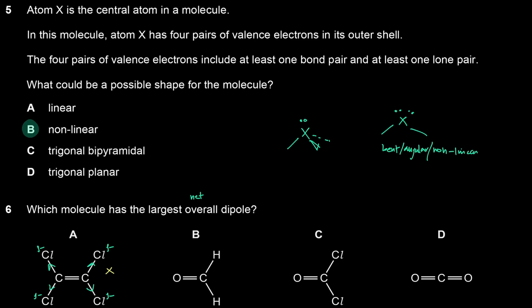Molecule B does have a net dipole towards the oxygen, since oxygen is delta minus and carbon is delta plus. Molecule C also has a net dipole, but which is bigger? In C, you have delta minus oxygen competing with delta minus chlorine — so there's movement toward chlorine and toward oxygen. The overall net dipole in C is smaller because the chlorines compete with the oxygen. In B, hydrogen can't compete with the oxygen, so the answer is B.